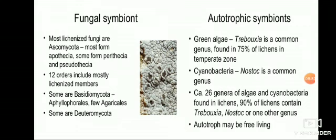The fungal symbiont forms the structural part while the autotrophic symbiont is either cyanobacteria or algae. Most lichenized fungi are Ascomycetes, most forming Apothecia, some forming Perithecia and Pseudothecia. Some are Basidiomycota and some are Deuteromycota. Depending on the fungus type associated with the algae, they are divided into Ascomycota, Basidiomycota, and Deuteromycota.